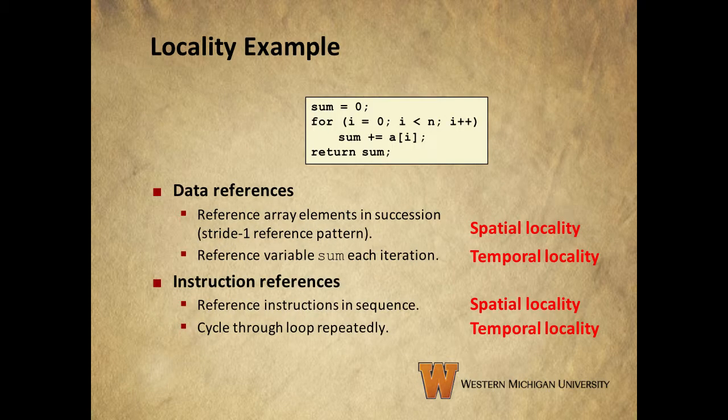A great example of these concepts in action is the summing of the contents of an array. In this snippet of code, we just loop through the indices of array A and add the contents of each index to the variable called sum. The elements of an array are stored sequentially in memory, so as we loop through, each element we reference is right next to the last element we referenced. This is an example of good spatial locality.